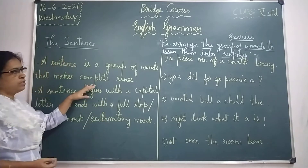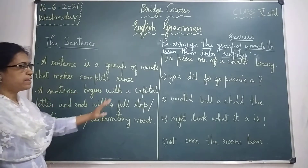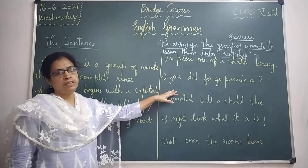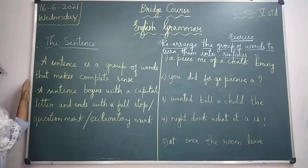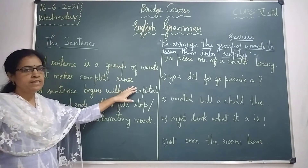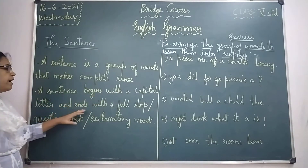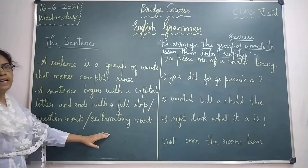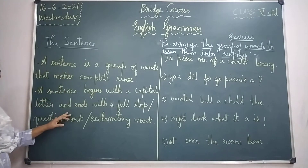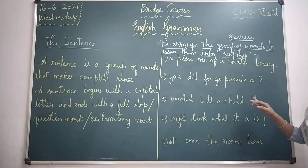So let us start today's session with the sentence. What is a sentence, and how does it begin and end? A sentence is a group of words that makes complete sense. A sentence begins with a capital letter and ends with a full stop, or a question mark, or an exclamatory mark.